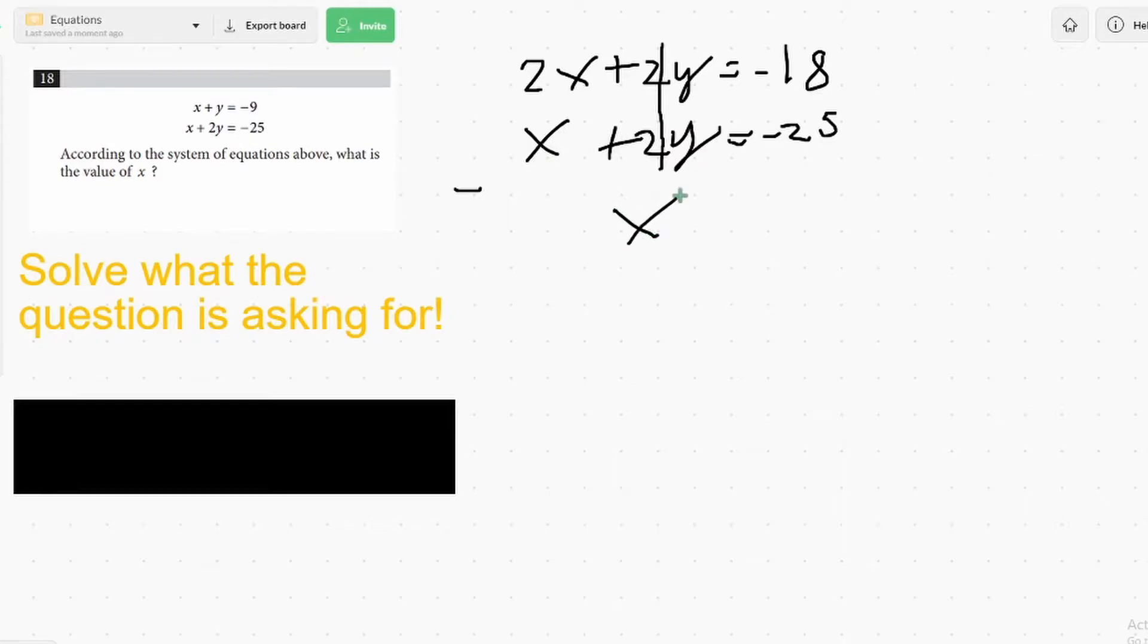And now if we subtract, we can get rid of the y and directly solve for x. Right away, we get x equals negative 18 minus negative 25, which is 7. So we get x equals 7. We get the answer right away. We don't have to get y first. So we solve the question more quickly and stop ourselves from making any mistakes as we go through a longer problem.